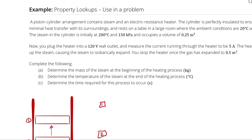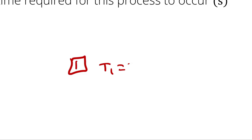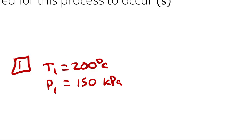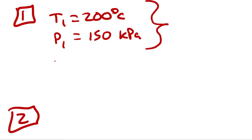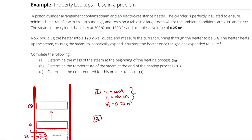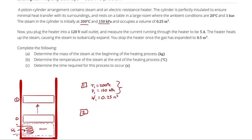At state 1, I know we have an initial temperature and pressure of 200 degrees Celsius and 150 kilopascals. Those two independent intensive properties will allow me to look up whatever I want. We also know the initial volume is 0.25 cubic meters, and the end condition is defined as a volume of 0.5 cubic meters.